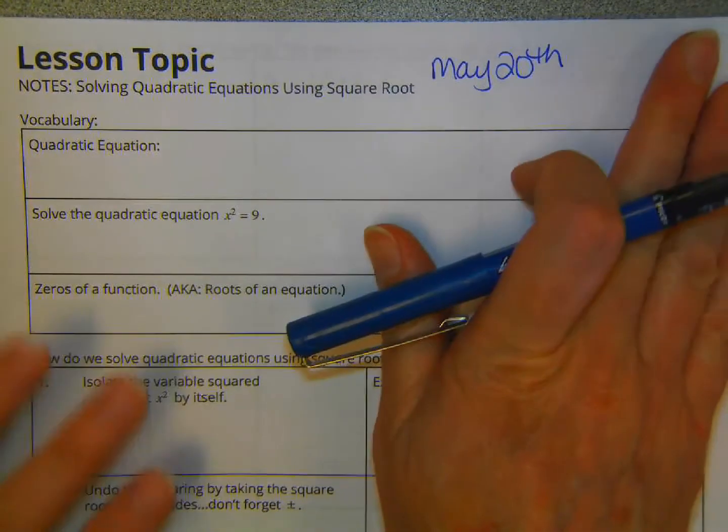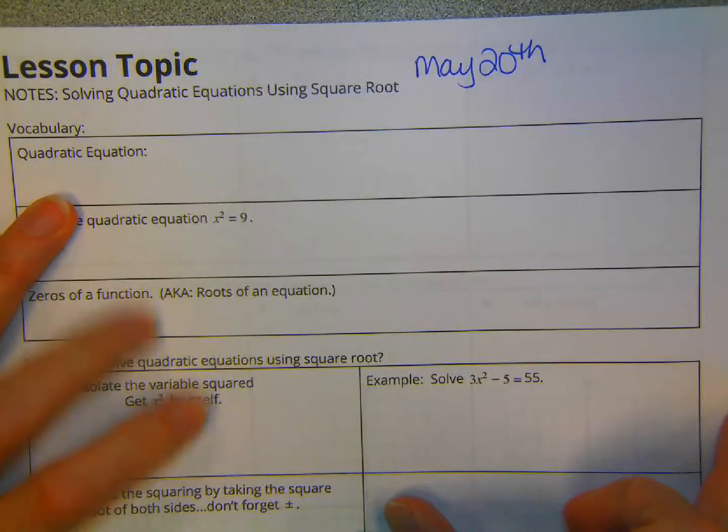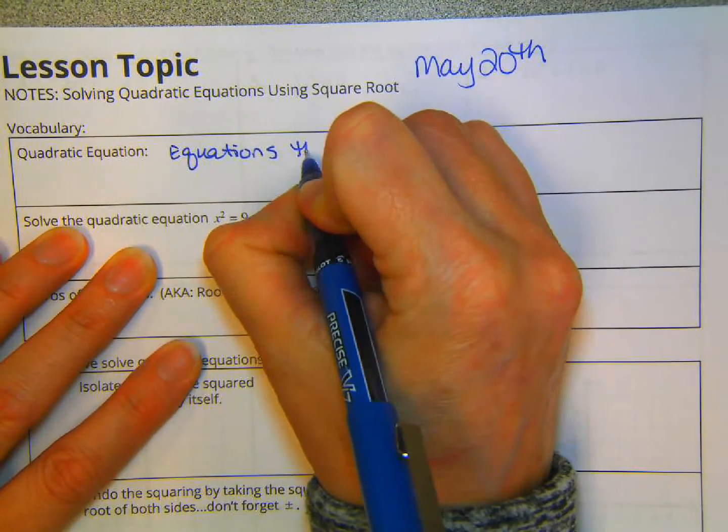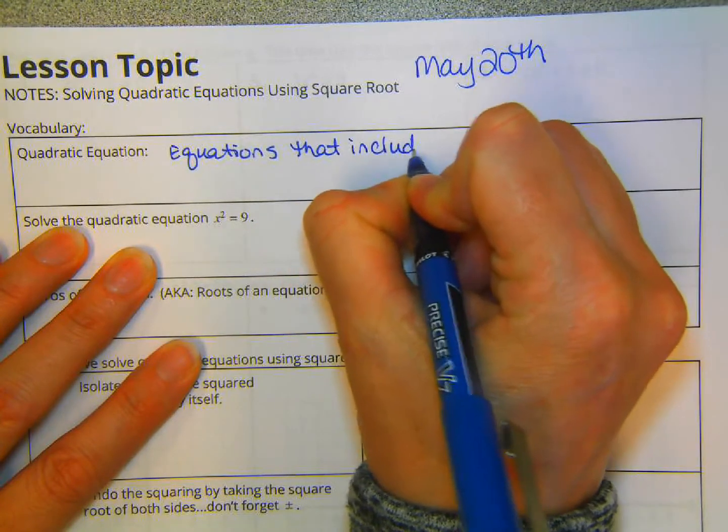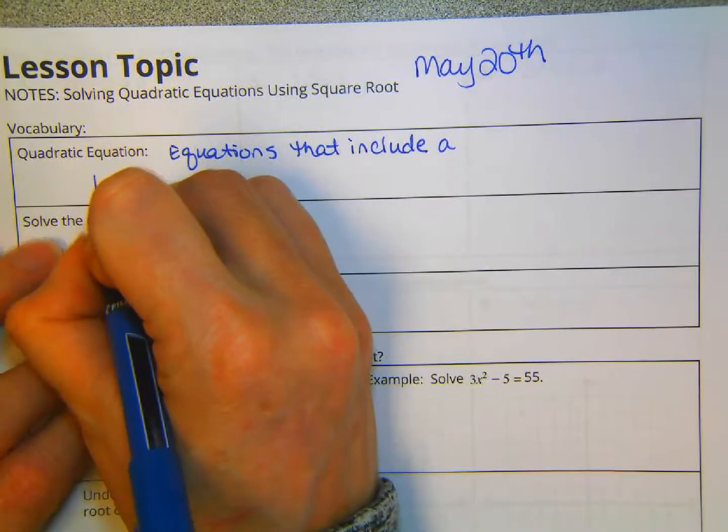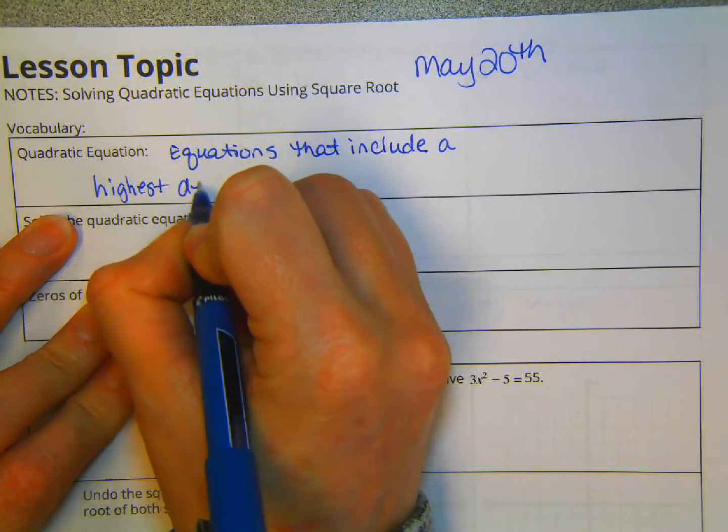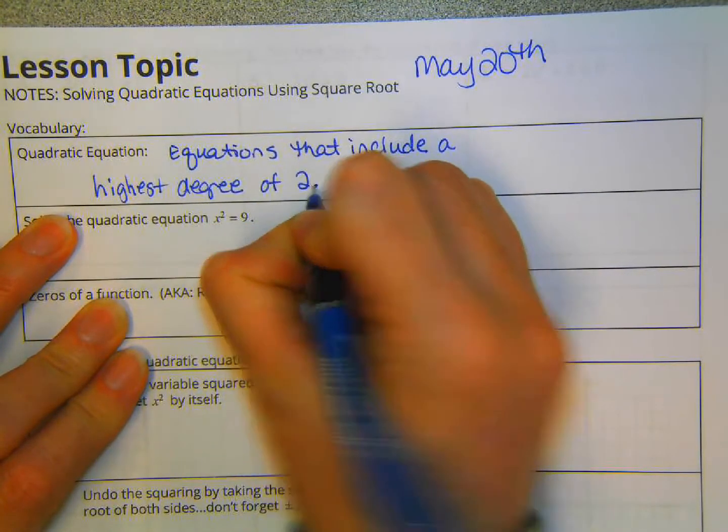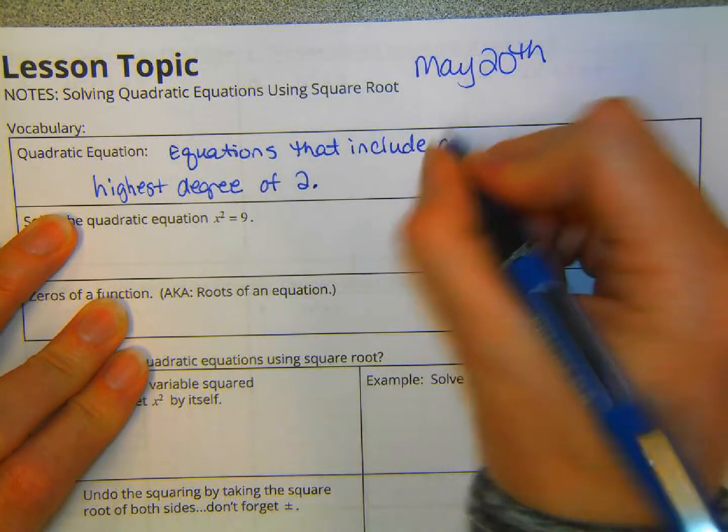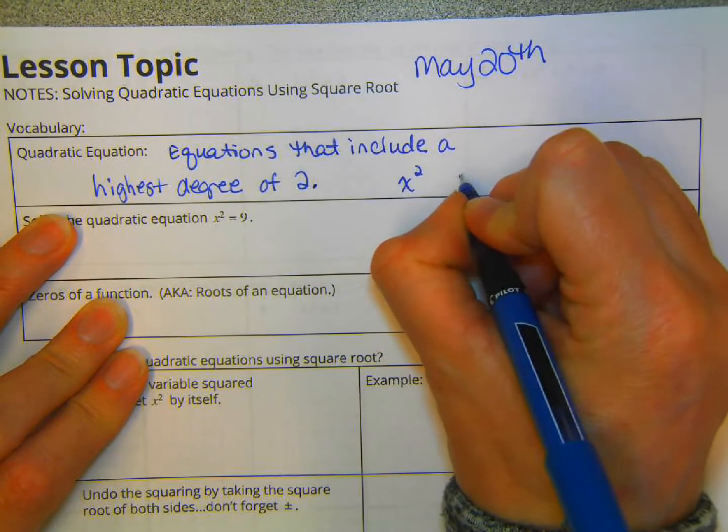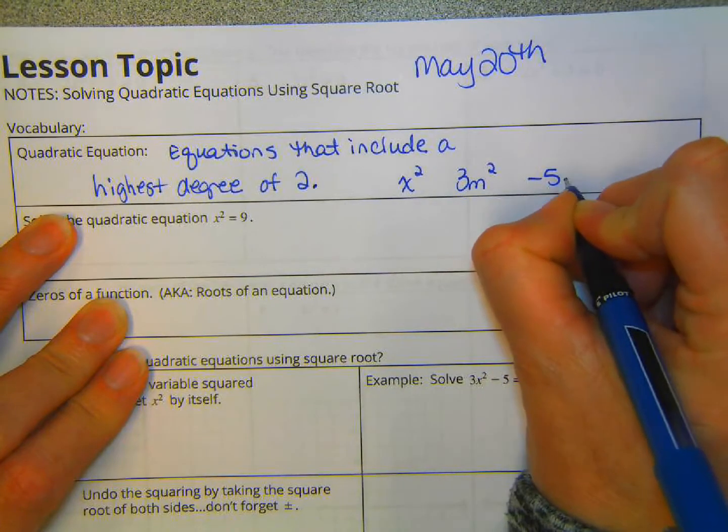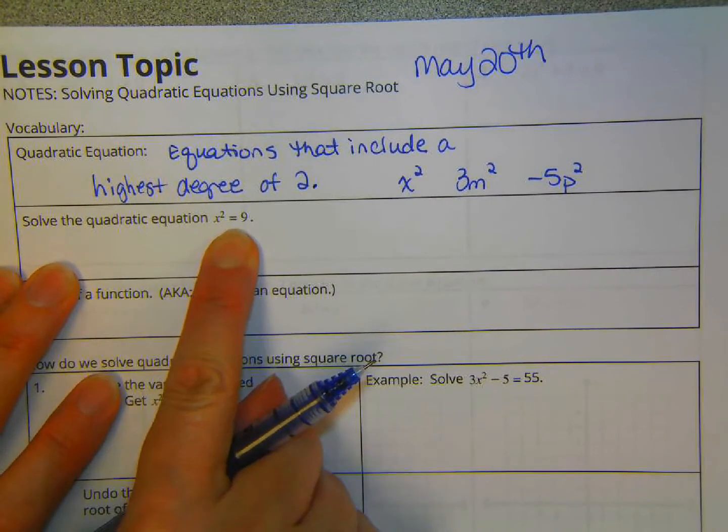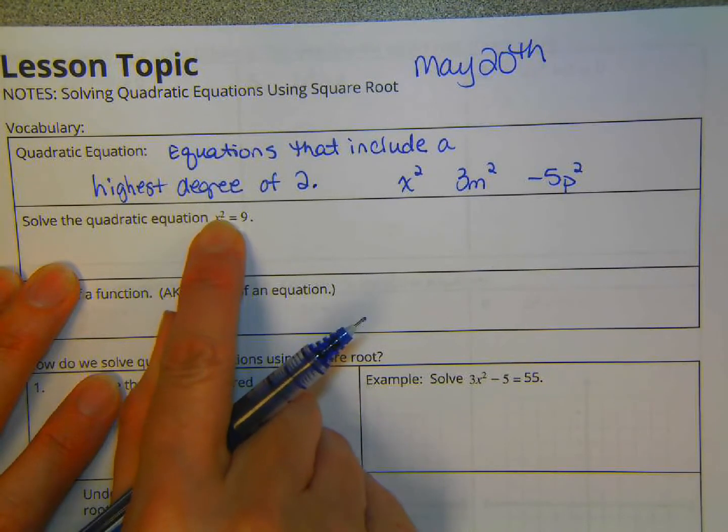First off, what is a quadratic equation? Well, a quadratic has a degree of two. These are equations that include a highest degree, a.k.a. exponent, of two. So that could be x squared, or 3m squared, or negative 5p squared. That would be the highest degree term. So here is a quadratic equation. Highest degree in the whole equation is two.